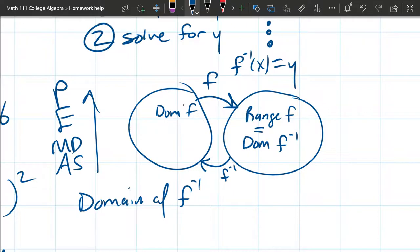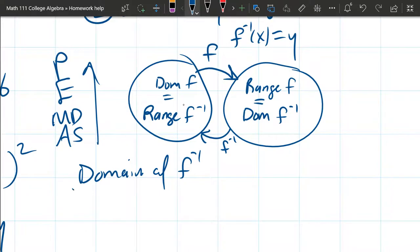So you could also call this domain of f inverse that's equal to the range of f. Basically a function and its inverse swap domain and range because they go backwards with respect to each other. And if you ask f inverse, hey what's over here? f inverse will tell you, oh that's my range. So they're asking in the question, what is the domain of f inverse? You can see it right here. That's the domain of f inverse. It's also known as the range of f.